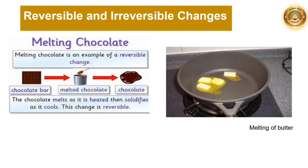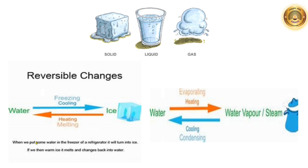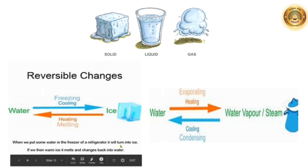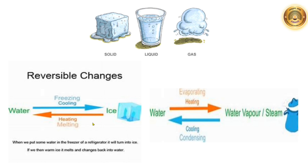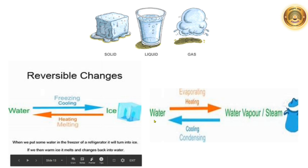Similarly, butter: on heating, the butter will melt and when it cools, it will solidify. So this is again a reversible change. When we put some water in the freezer of a refrigerator, it will turn into ice. If we warm the ice, it melts and changes back into water. So this is again an example of a reversible change. Similarly, water on heating changes to water vapour, and the water vapour on cooling or condensing changes to water again. So this is again a reversible change.